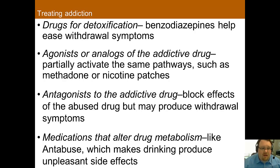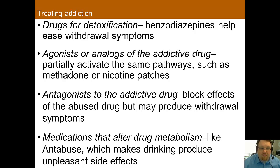There are also many ways that medications have been used to treat drug addiction. Benzodiazepines have been used to help reduce withdrawal symptoms, which is in line with the physical dependence model of abuse. Similarly, agonists of the addictive drug that are not as dangerous have been used to help reduce cravings and keep the person abstinent — examples include methadone or nicotine gum or patch. In line with the reward view of addiction, antagonists of the drug have been used to block the effects of the abused drug, though these can also create withdrawal symptoms.